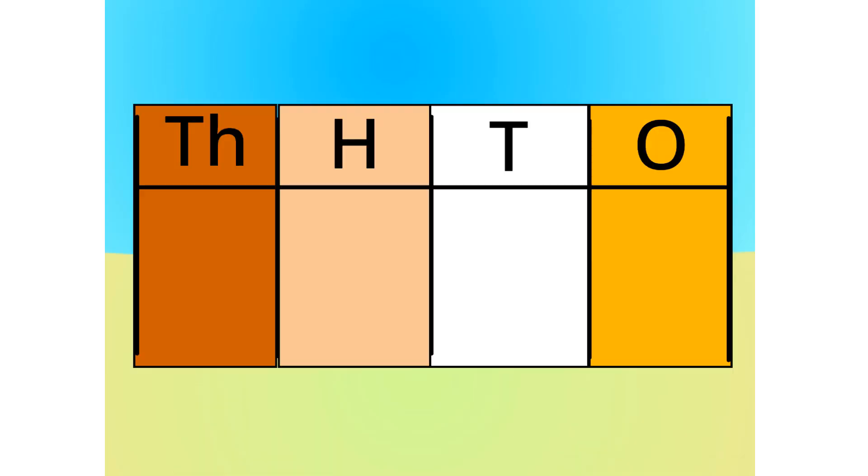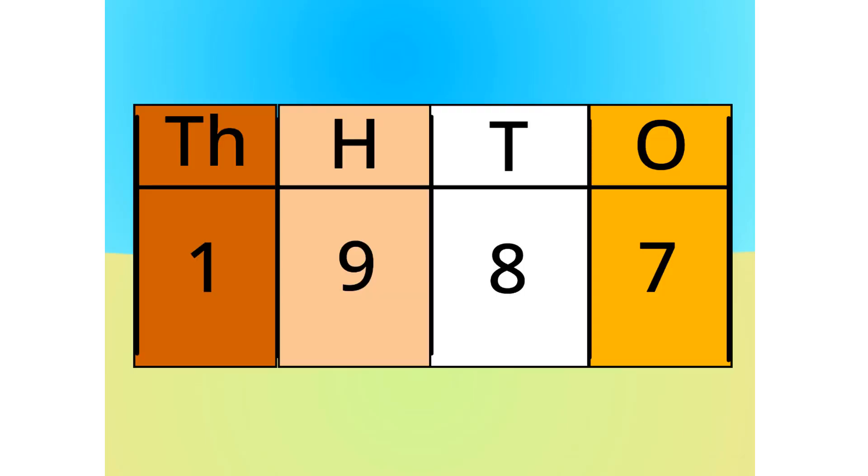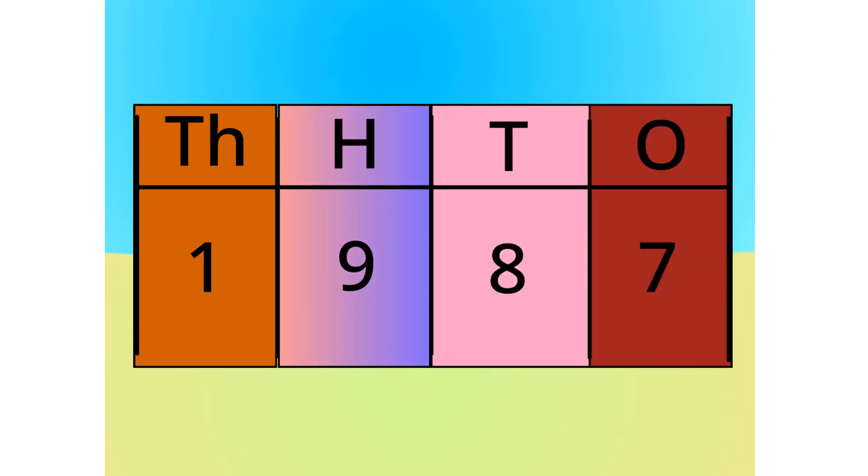First off, the number table. Let's do 1,987 for example. Do you see anything that relates to this number? Let's split it into its units. This number is made up of 1 thousand, 9 hundreds, 8 tens, and 7 ones. See? Let's see this in block form.